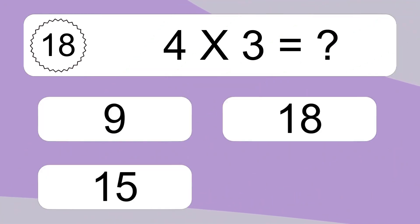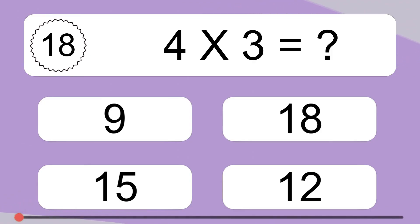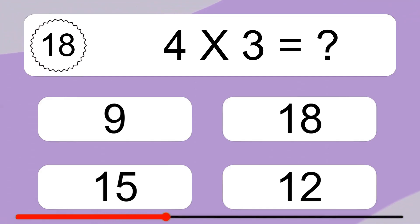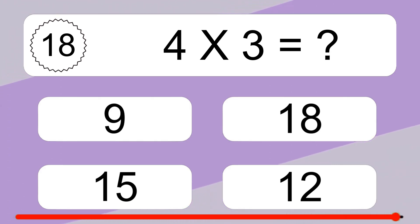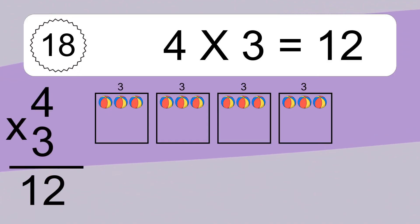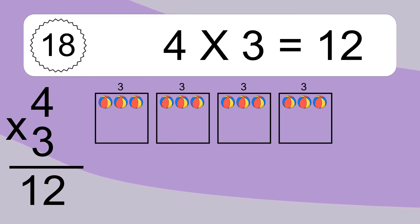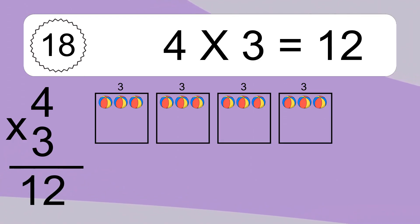4 times 3 equals what? 4 times 3 equals 12. We have 4 boxes, and each box has 3 colorful balls inside.